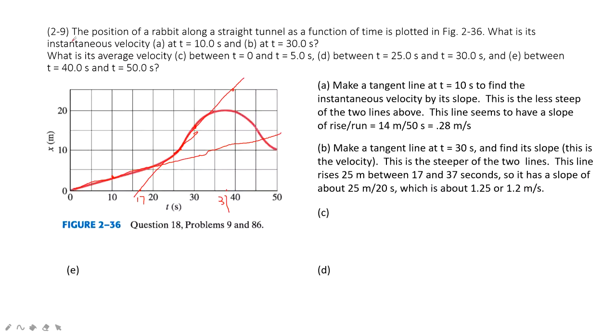So when we consider instantaneous velocity, we just draw the tangent line on this point. The next one is find the average velocity. So at the time period t equal to 0 to 5 seconds. So there, this is 5.